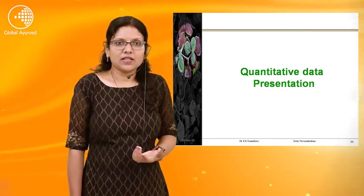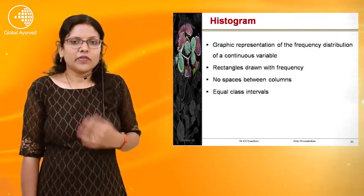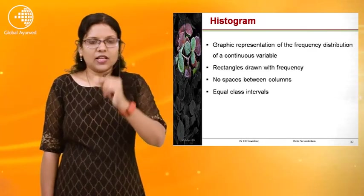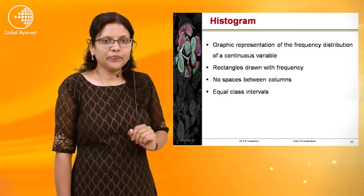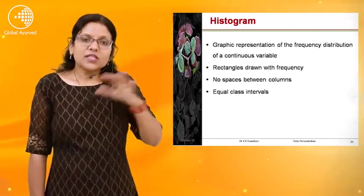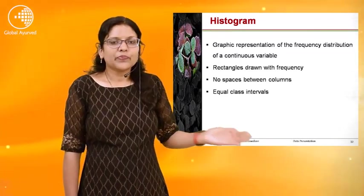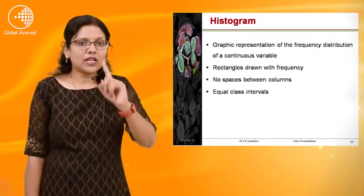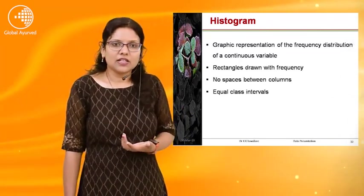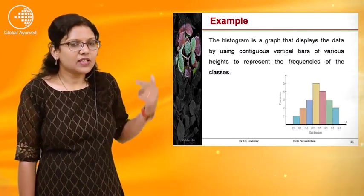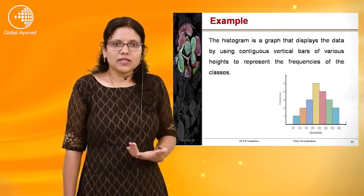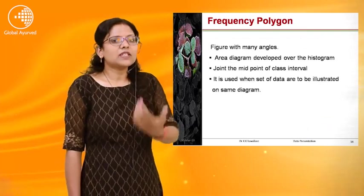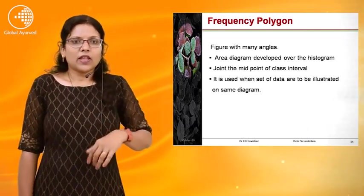Next we will see quantitative data presentation. For quantitative data, the histogram is used — it is a graphic representation of the frequency distribution of a continuous variable. In a histogram, rectangles are drawn with frequency. The key difference from a bar diagram is that in a histogram there is no space between the columns, whereas in a bar diagram there is space between rectangles. There is also an equal class interval. The histogram displays data using continuous vertical bars of various heights to represent frequencies of classes.